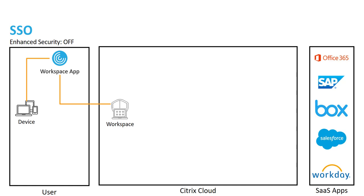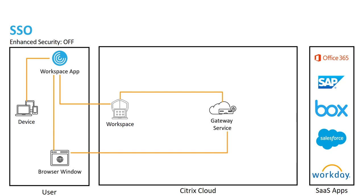Once authenticated, you're going to see a list of your SaaS and web-based applications within your local Workspace app. When the user selects one of those applications, that request gets forwarded to Workspace and onto the gateway service. The gateway service, based on the endpoint's capabilities and our enhanced security configuration, replies to the launch request with a one-time use URL as well as the recommended browser. In this instance, that's the local browser, which initiates a connection to the gateway service with that one-time use URL. The gateway service then requests an assertion from the single sign-on microservice.